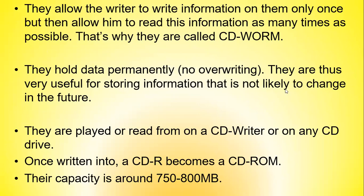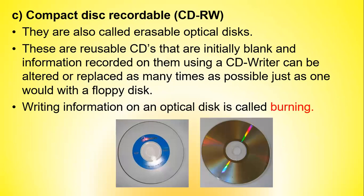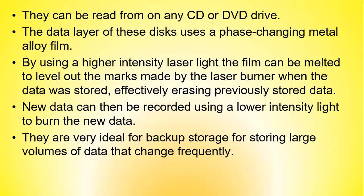Compact Disc Re-Writable discs (CD-RW), also called erasable optical discs, are reusable CDs that are initially blank and can have information recorded on them using a CD writer; the information can be erased or replaced as many times as possible, just as with a floppy disk or a flash disk. Writing information on an optical disc is called burning, and they can be read from on any CD or DVD drive. The data layer uses a phase-changing metal alloy film; using a higher intensity laser light the film can be melted to level out marks made by the laser burner, effectively erasing previously stored data, and new data can then be recorded using a lower intensity light. They are very ideal for backup storage and for storing large volumes of data that change frequently.